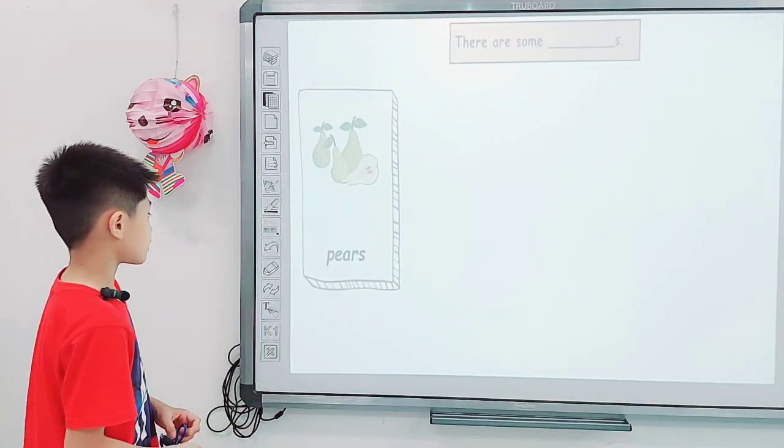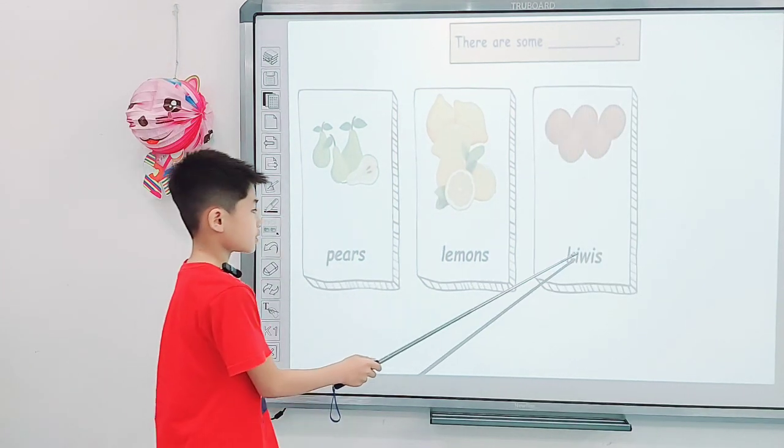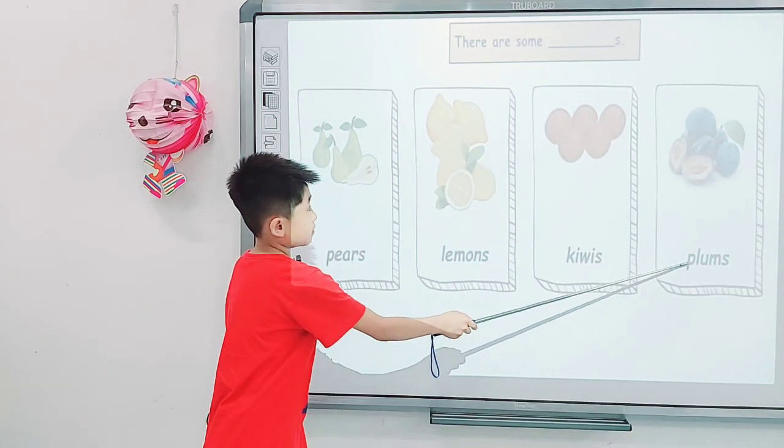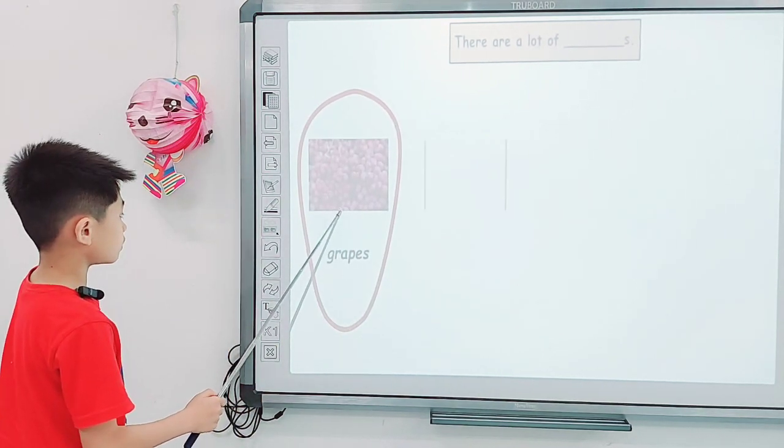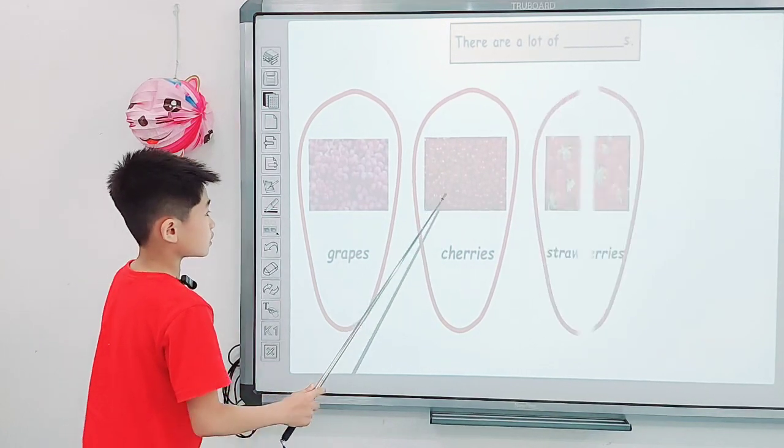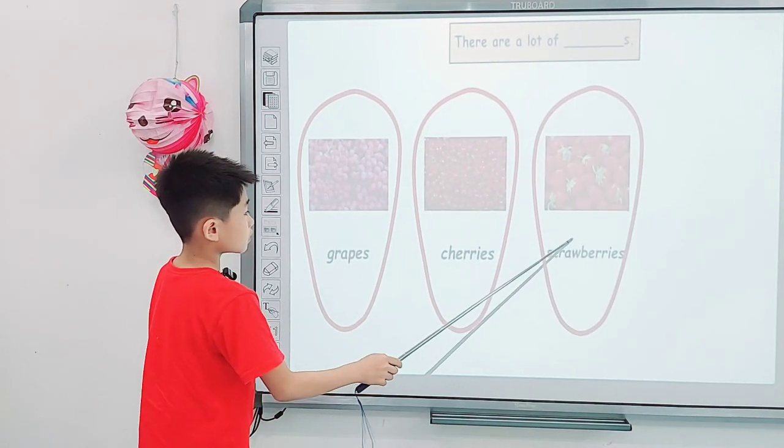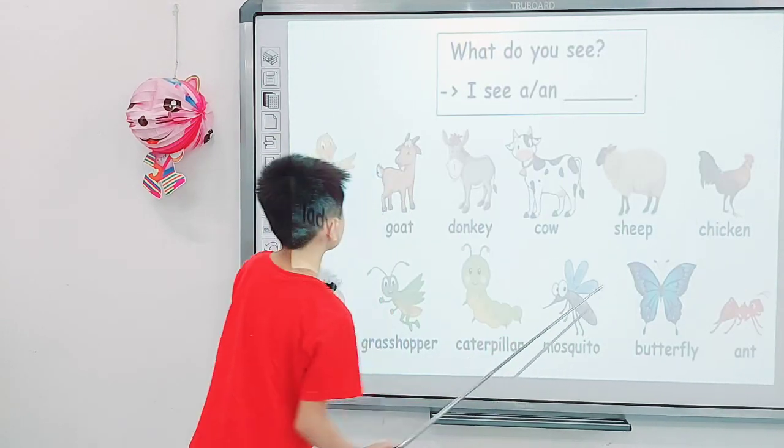Next one, there are some pears, there are some lemons, there are some kiwi, there are some plums. There are a lot of berries, there are a lot of cherries, there are a lot of strawberries, there are a lot of coconuts.